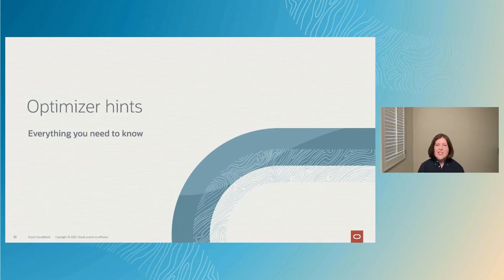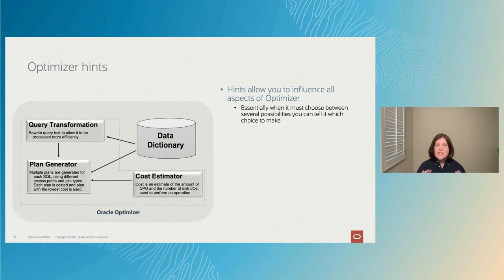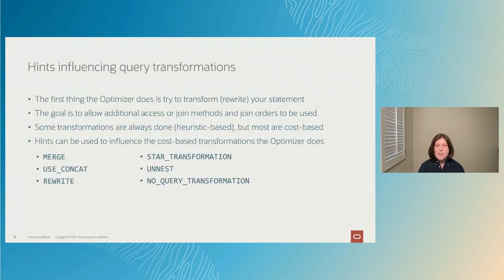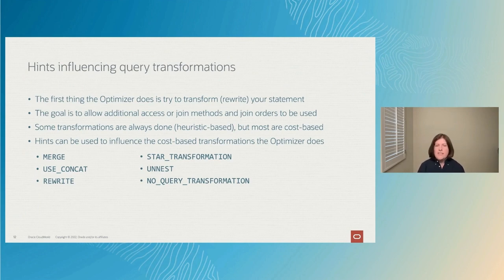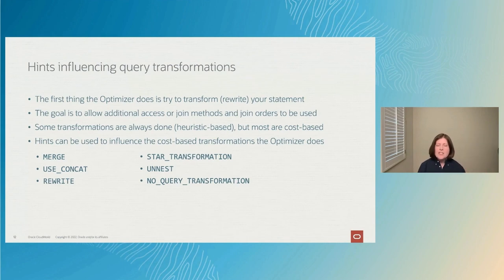But we're here to focus on optimizer hints specifically. You can use hints to influence every decision the optimizer makes — whenever it has to choose between more than one option, you can tell Oracle exactly which choice to make. The first thing the optimizer does when you issue a SQL statement is transform or rewrite it, with the goal of opening up additional access methods, join methods, or join orders. Some transformations are heuristic-based, but the majority are cost-based, where the optimizer costs the plan both with and without the transformation and picks the lowest cost.